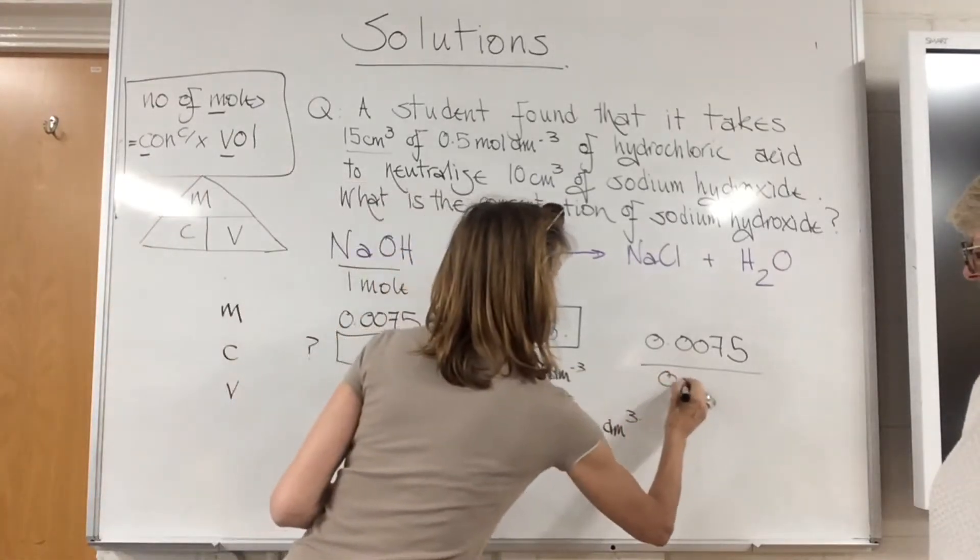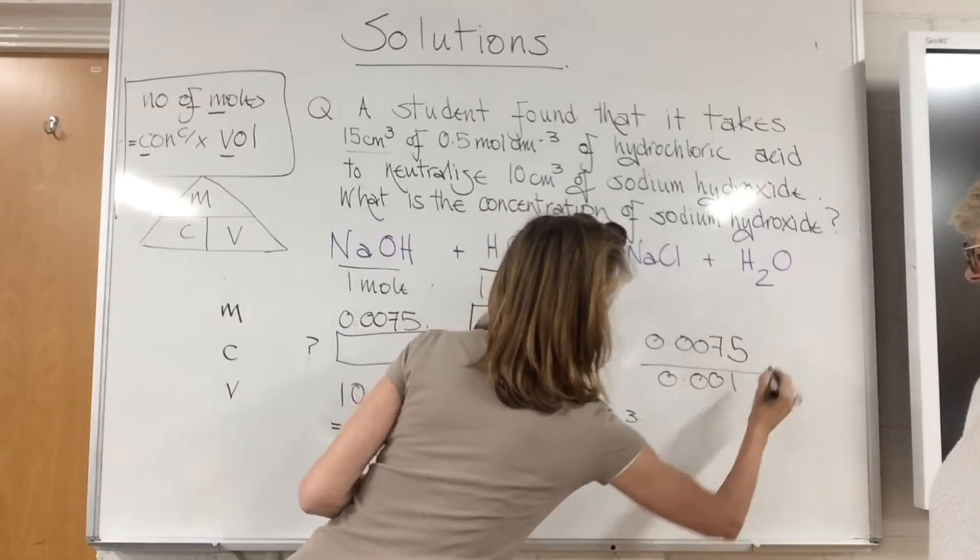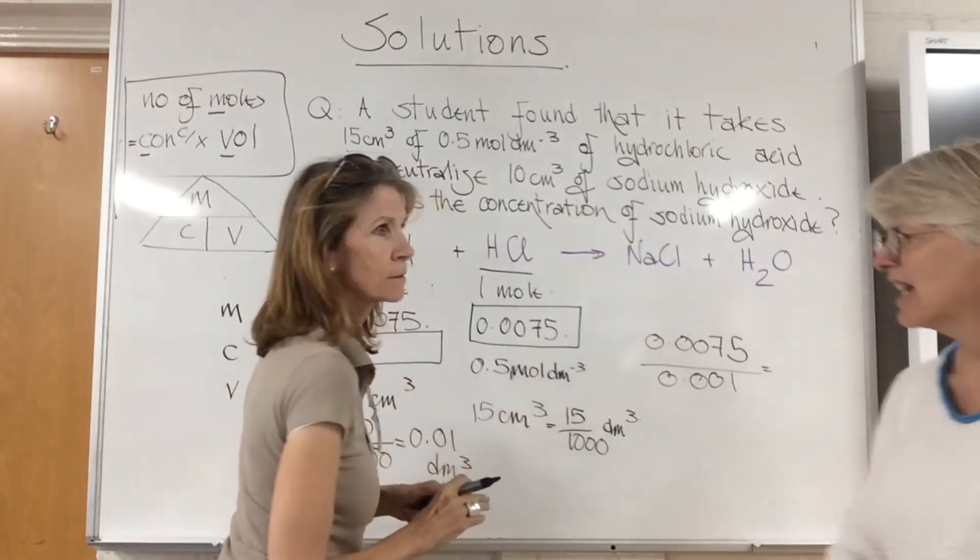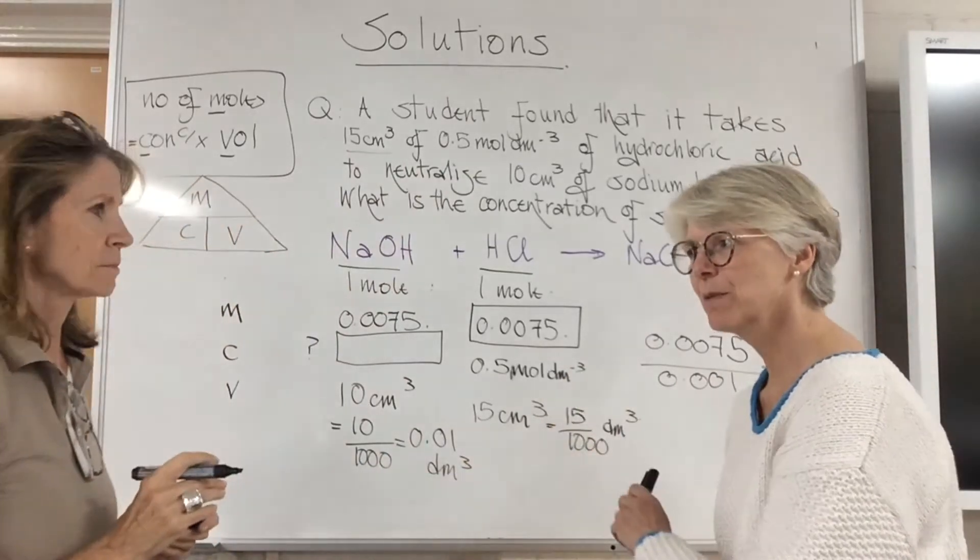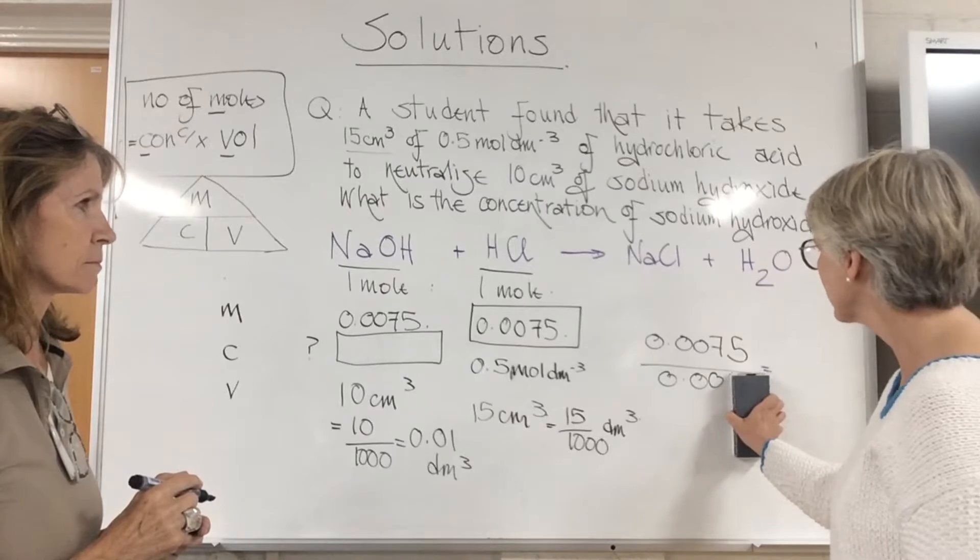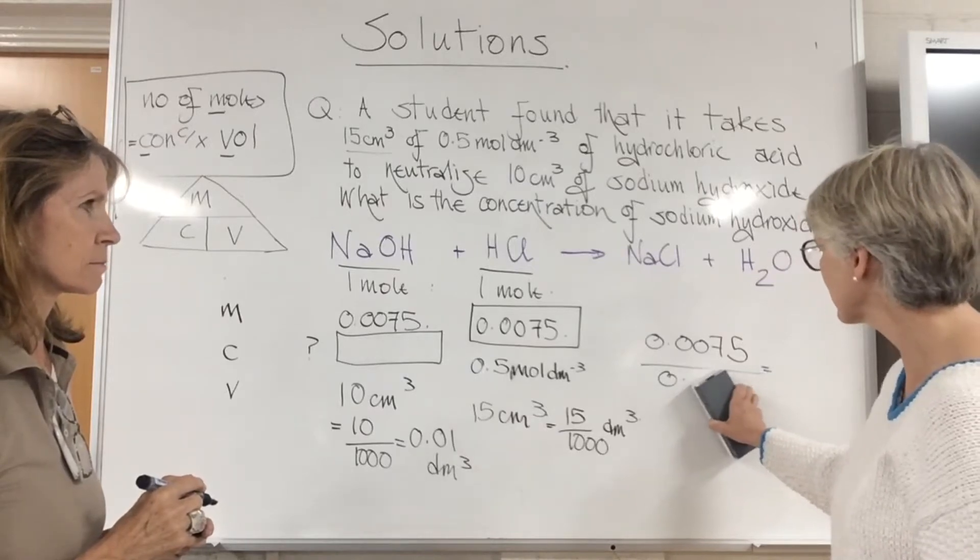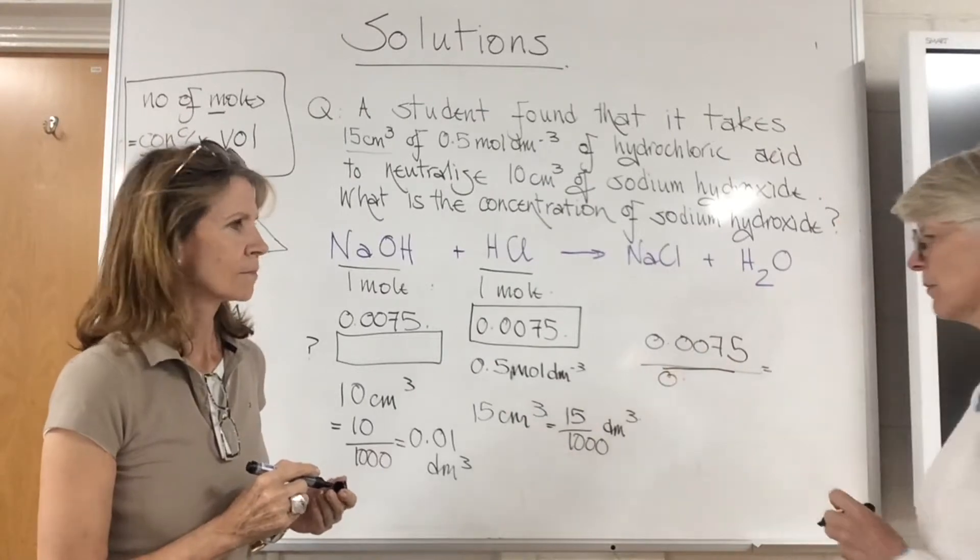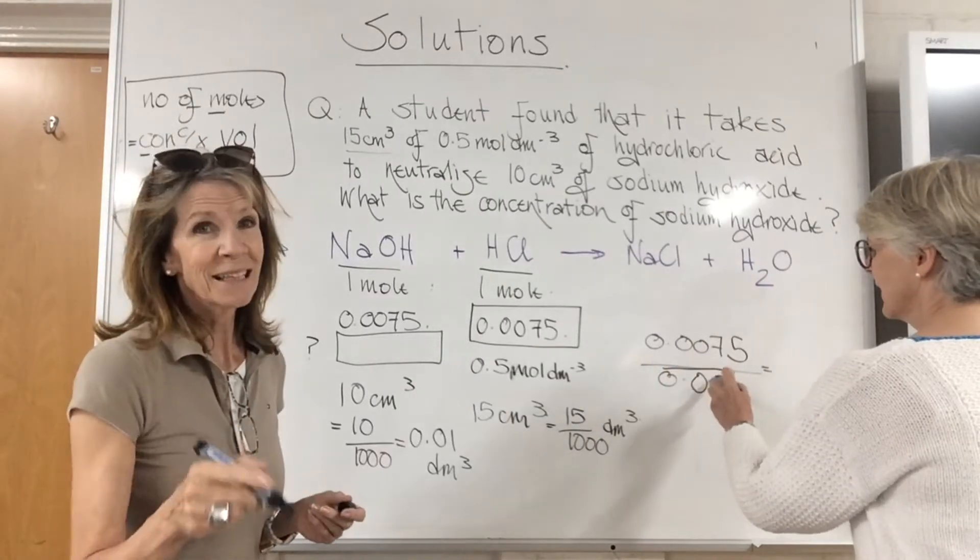Which is 0.001. Now hang on, can we just check that again? How many zeros? That is a very common mistake - that people put the wrong number of zeros after the decimal point. I'm glad you did that because that's a warning to all. What is it now? 0.01. These are deliberate mistakes obviously.